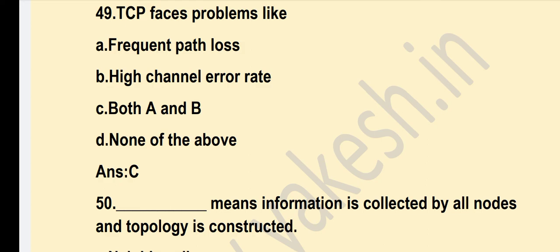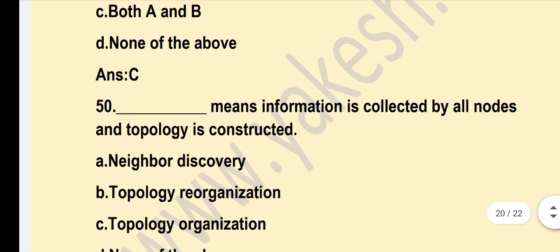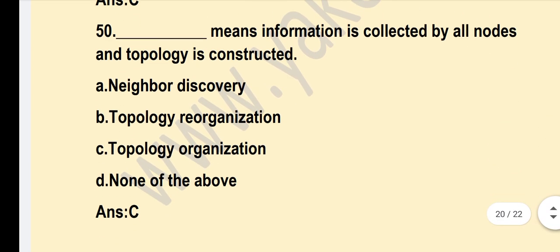The blank means information is collected by all nodes and topology is constructed. Option C — Topology Organization — is the correct answer.